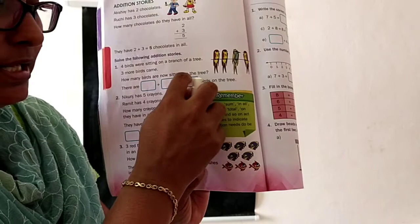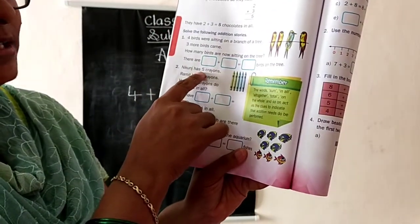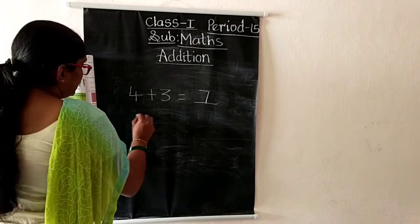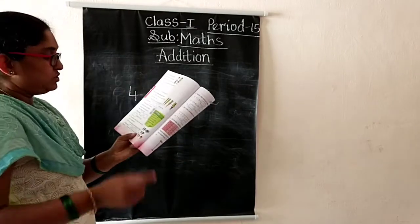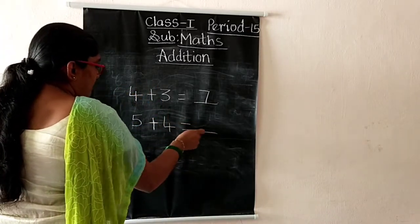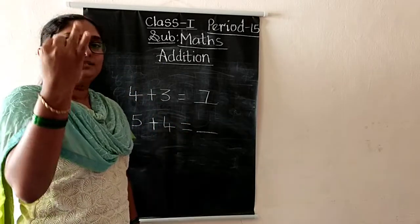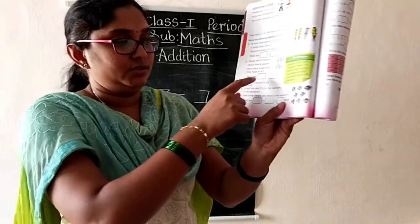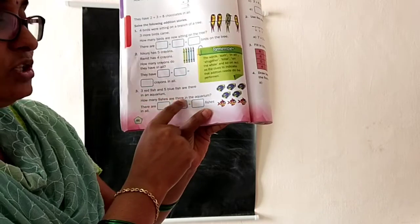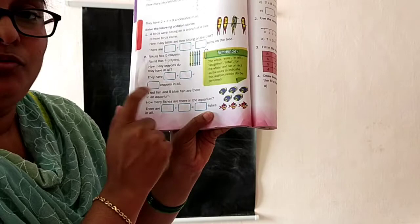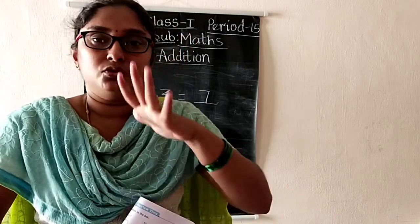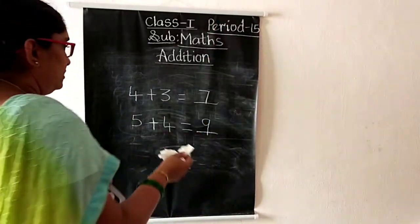Nikunj has five crayons, Ramit has four crayons. How many crayons do they have in all? Total — we have to add. Five in the mind, take four fingers: five after six, seven, eight, nine. So totally they are having nine crayons. And three red fish and five blue fish are in an aquarium. Three plus five: three in the mind, take five fingers, three after four, five, six, seven, eight. Total eight fishes.